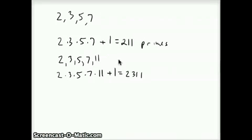Let's say that instead, you thought the complete list of primes was 2, 3, 5, 7, and 11. Now when you multiply 2 times 3 times 5 times 7 times 11 and you add 1, you get 2,311. And it just so happens that in this case, 2,311 is prime also.